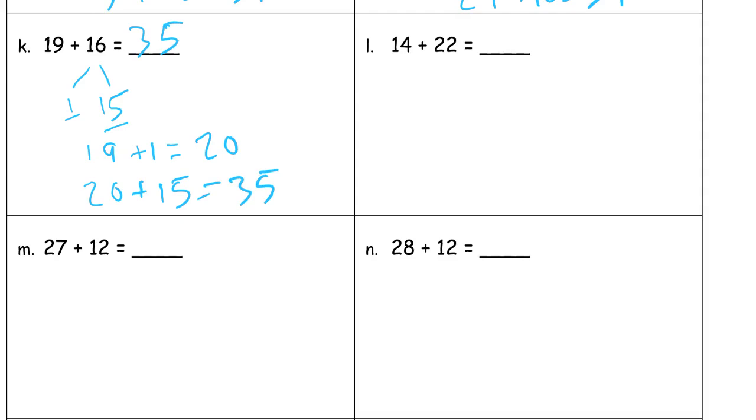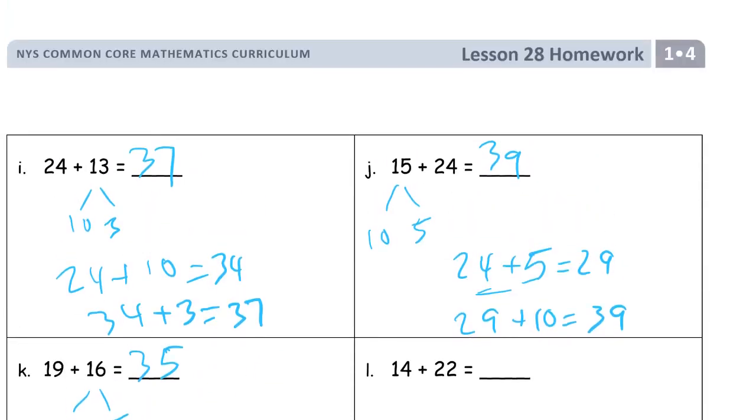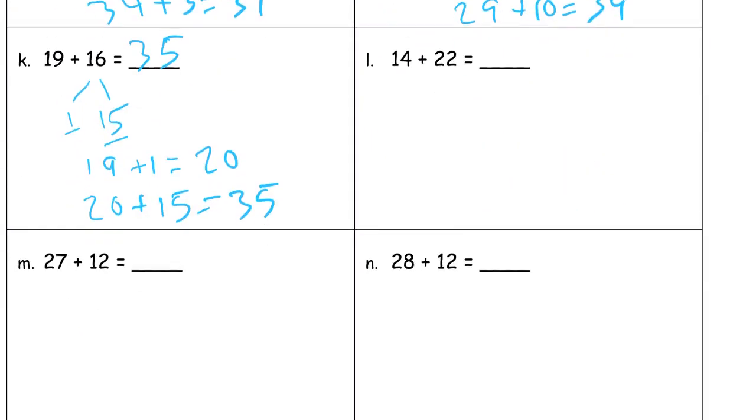14 plus 22. I haven't drawn any quick tens recently, so that's what I'm going to do next, just for variety. If you want to keep using number bonds or arrow ways, that's fine. I'm just trying to show all the different methods. Drawing 1, 2, 3, 4, and then the 22 is going to have two ones and two tens. So we have three tens for 30 plus six ones, which gives us 36.